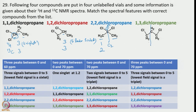For 1,3-dichloropropane, again we have a C2 axis of rotation and two types of signals: the methylene with chlorines on both sides, and the central methylene. The central methylene would show a quintet and the terminal methylenes show a triplet. The lowest field signal is also a triplet. With this information we can identify the correct chloro derivative from the 4 columns.